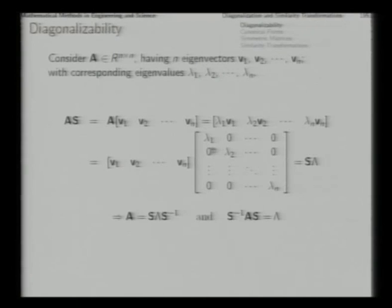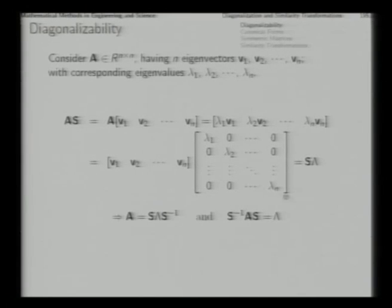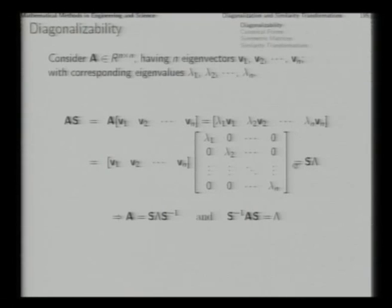Similarly, the second column of S·Lambda is v1·0 + v2·lambda2 + v3·0 + ... = lambda2·v2, and all subsequent columns match correspondingly. This diagonal matrix with the eigenvalues of A sitting in the diagonal positions we call Lambda. This gives us A·S = S·Lambda.